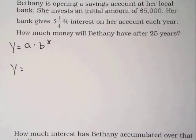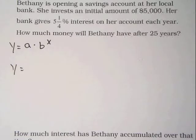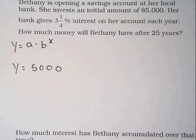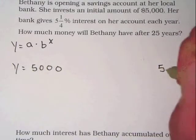Our second example says: Bethany is opening a savings account at her local bank. She invests an initial amount of $5,000. Her bank gives 5 and 1/4 percent interest on her account each year. How much money will Bethany have after 25 years? Bethany's initial investment of $5,000 goes in for A. Since the bank is paying Bethany interest, she is earning more money each year. Therefore, this is an example of exponential growth. To calculate our growth rate, we first convert 5 and 1/4 percent to 5.25 percent.